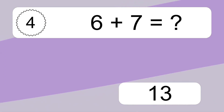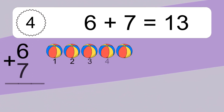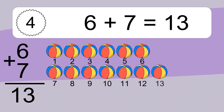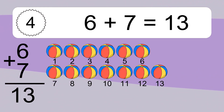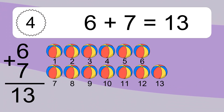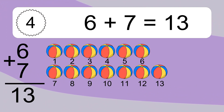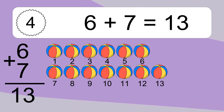6 plus 7 equals 13. Let's count it. 1, 2, 3, 4, 5, 6, 7, 8, 9, 10, 11, 12, 13.